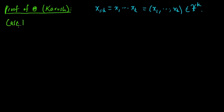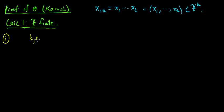We're going to break up the proof into two parts. Case one will be when our source alphabet is finite, and then we'll consider the countably infinite case. For case one there are going to be two sub-parts. First let's think about the following situation: let's say we have two integers k and s, with k strictly positive and s non-negative.